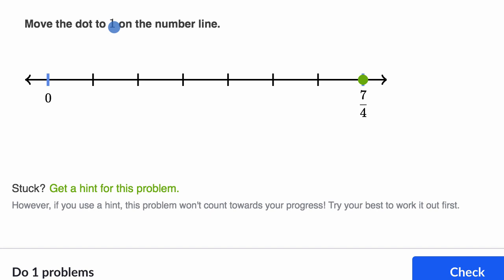Well, one would be four fourths. So we would go one fourth, two fourths, three fourths, and then four fourths. So that's where one is.